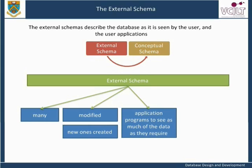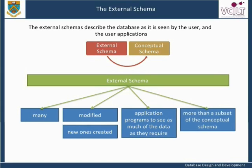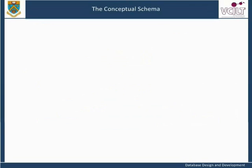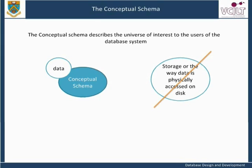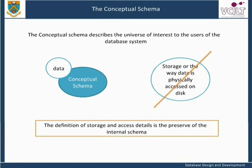In this way, the external schema provides a view of the data that corresponds to the nature of each task. The external schema is more than a subset of the conceptual schema; while items in the external schema must be derivable from the conceptual schema, this could be a complicated process involving computation and other activities. The conceptual schema describes the universe of interest to the users of the database system. For a company, it would provide a description of all of the data required to be stored. From this organization-wide description of the data, external schemas can be derived to provide data for specific users or to support particular tasks. At the level of the conceptual schema, we are concerned with the data itself rather than storage or the way data is physically accessed on disk. The definition of storage and access details is the preserve of the internal schema.